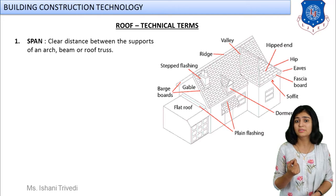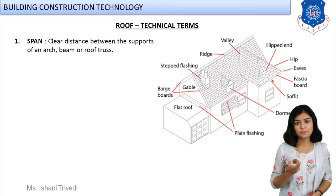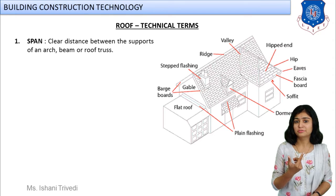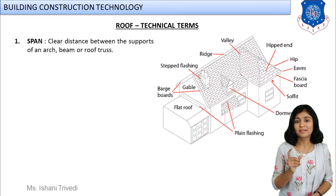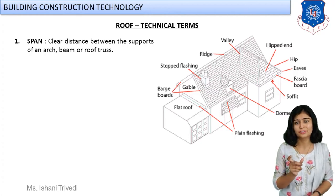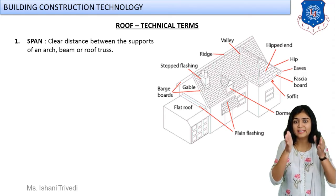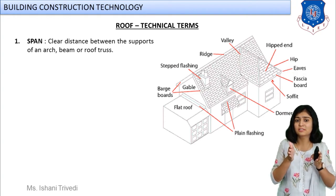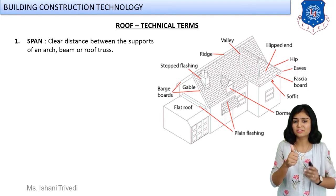In this session, we are going to discuss all the technical terms, which are around 11 to 12. The first technical term is span. Span means the clear distance between the two supports. Whether it is an arch, a beam, a roof truss, or a flat roof — it is the clear distance between the two end supports. Your roof rests on supports fixed in the wall, and that distance between the two supports is your span.